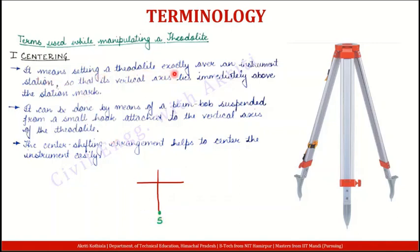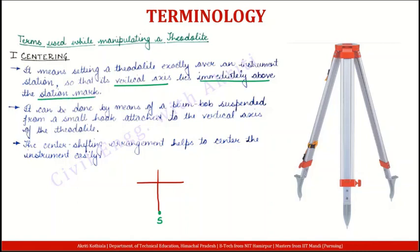So it means setting a theodolite exactly over an instrument station so that its vertical axis lies immediately above the station mark. So vertical axis kya kar raha hai — station mark ki ekdam oopar lie kar raha hai. Matlab aapne vertical axis ko truly vertical kar diya hai. It can be done by means of a plumb bob.